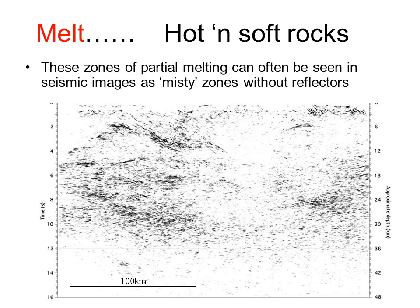We can detect these areas of partial melting in the crust, even though they may be tens of kilometers below the surface, using seismic surveys. Seismics show them up as misty zones without any strong reflectors, as in this seismic section in Nevada. Notice the scale of it — maybe 80 kilometers across and the same distance top to bottom. These can be very huge volumes of rock involved.